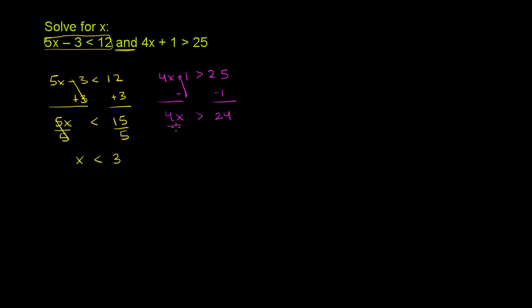Divide both sides by positive 4. Don't have to do anything to the inequality since it's a positive number. And we get x is greater than 24 over 4 is 6.